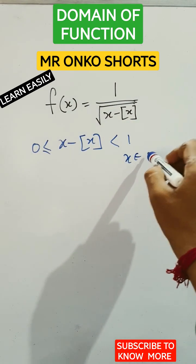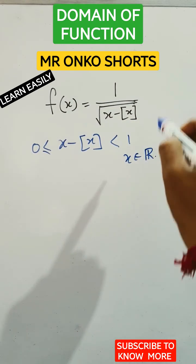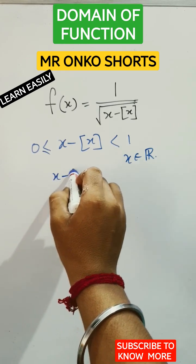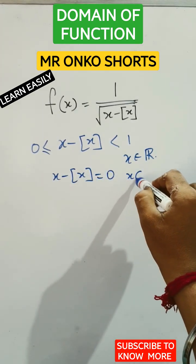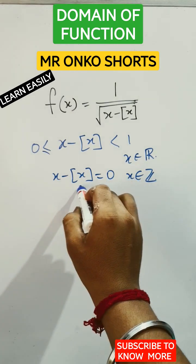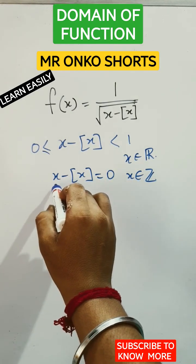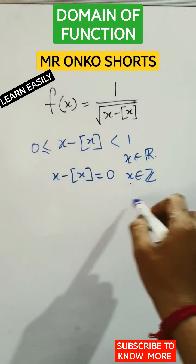Whenever x belongs to real number set and when x belongs to integer set the answer becomes 0 because this is greatest integer function and this is also integer since x belongs to integer set so it's 0.